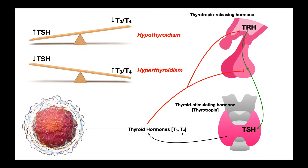These thyroid hormones exert negative feedback on the anterior pituitary and the hypothalamus. If the thyroid gland becomes too active and makes too much thyroid hormone, the elevated levels signal the anterior pituitary to make less TSH, since TSH normally increases thyroid hormone output. They also tell the hypothalamus to make less TRH. In practice, when looking at lab values, you'll rarely see TRH measured — the main value you'll actually see is TSH levels.